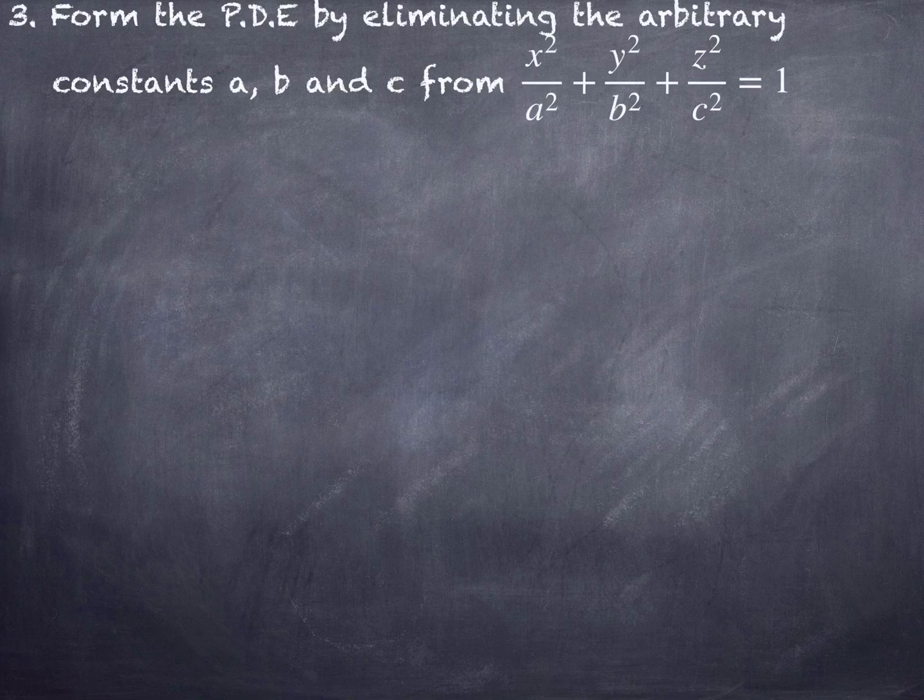Moving to the next problem: form the PDE by eliminating the arbitrary constants a, b, c from x²/a² plus y²/b² plus z²/c² equals 1. Here there are 3 arbitrary constants, so you must find at least one second-order partial derivative — not all partial derivatives are necessary, at least one is sufficient.